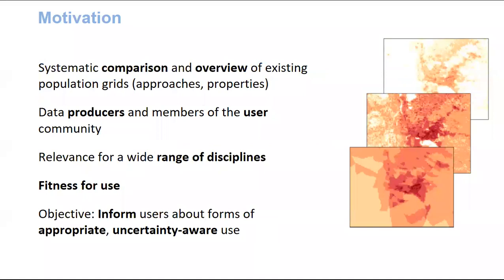The motivation was to write a systematic comparison and overview of existing population grids in relation to approaches and data properties — a gap in the scientific literature that needed to be closed. Written by data producers and members of the data and user communities, the idea was to reach a wide range of disciplines where these population grid data are highly relevant and will become more relevant in the near future. We wrote this under the lens of fitness for use, with the objective of informing the user community about appropriate uncertainty, or in other words, to avoid certain misuses that can happen easily when somebody is using this data without sufficient knowledge.